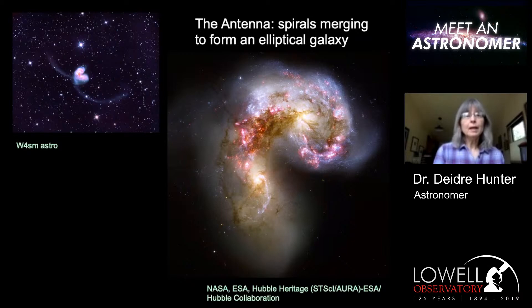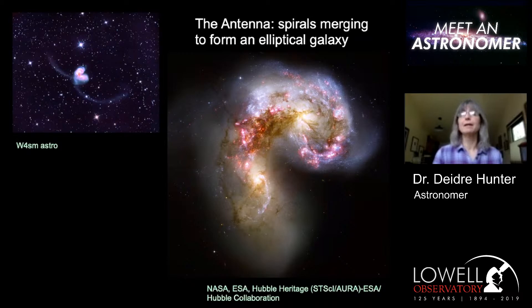That's why elliptical galaxies have very little gas and very little star formation today — it's not zero, but it's not very much. Mostly, we think of elliptical galaxies as red and dead. Their stars are one by one dying off.